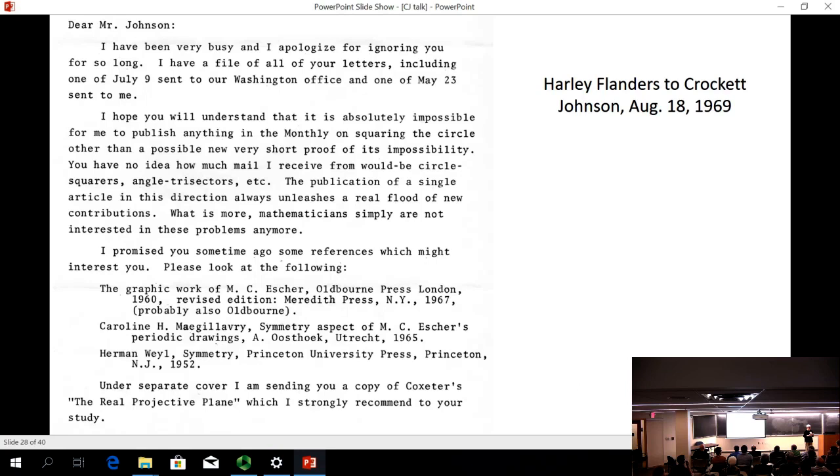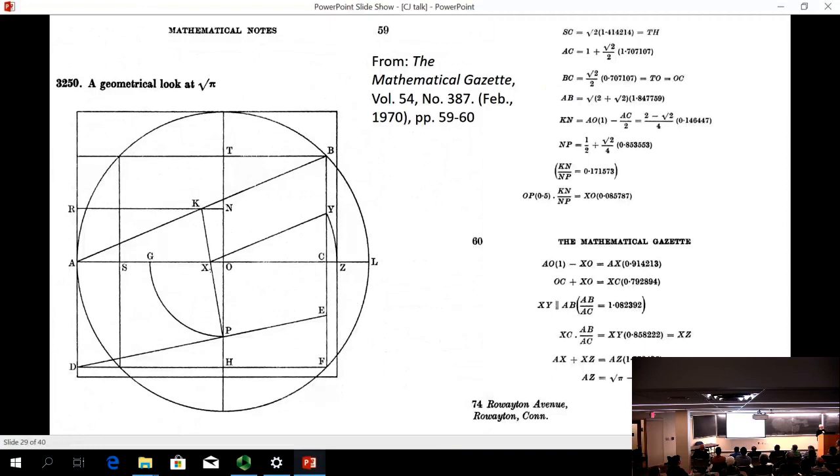About a year earlier in May 1968, the Mathematical Gazette's editor had already written C.J. telling him his method of approximation was one of the best I have seen. It is delightfully simple, and I think we can spare a little space for it. So, he wrote a page and a half article. That got published. And in it he presented a remarkably economical straight edge and compass construction that culminates in a line segment whose length is within one one hundred thousandth of the square root of pi.